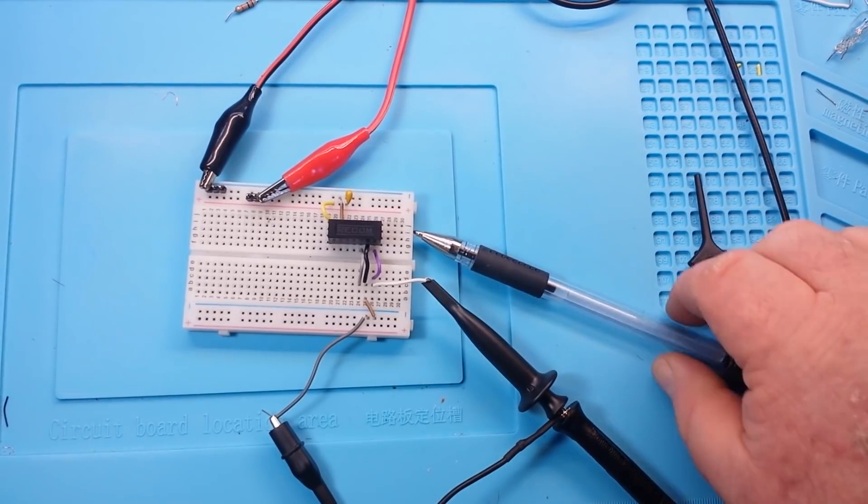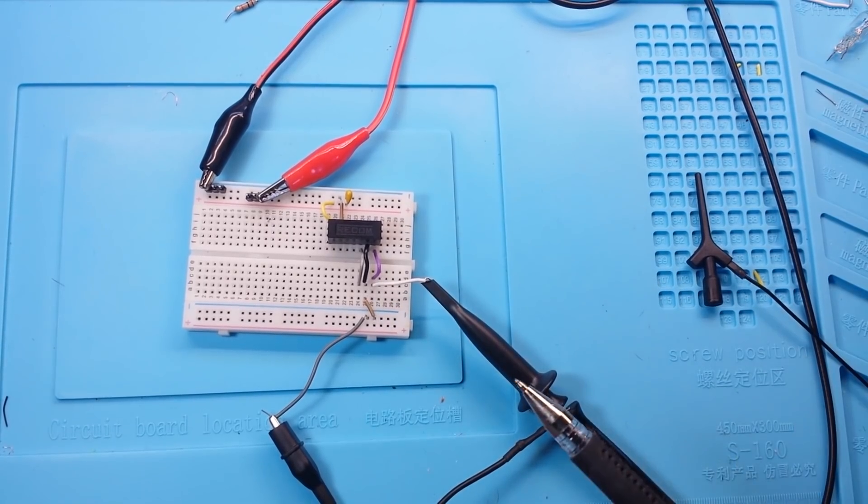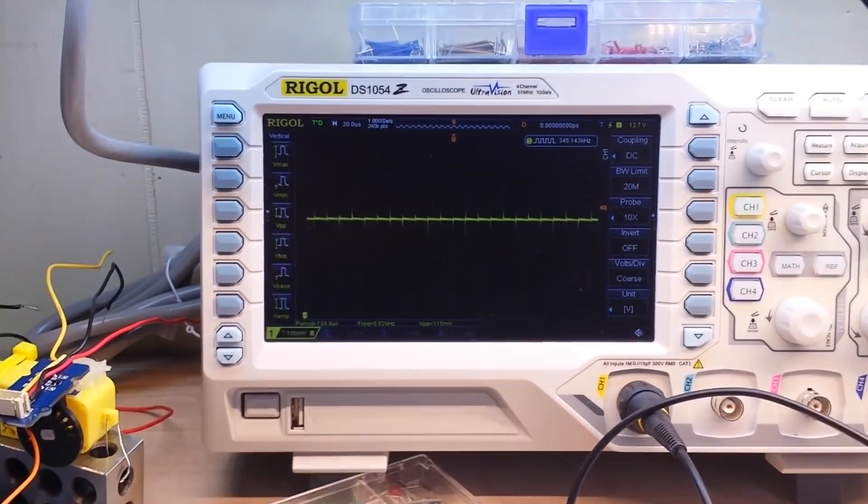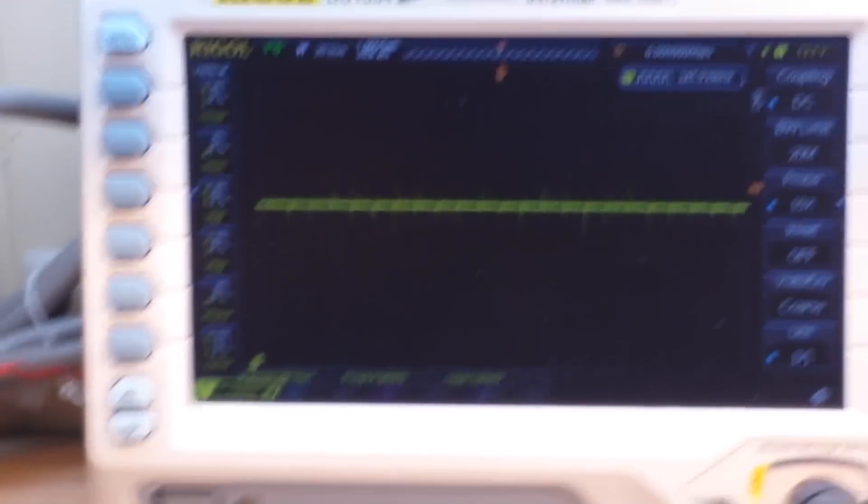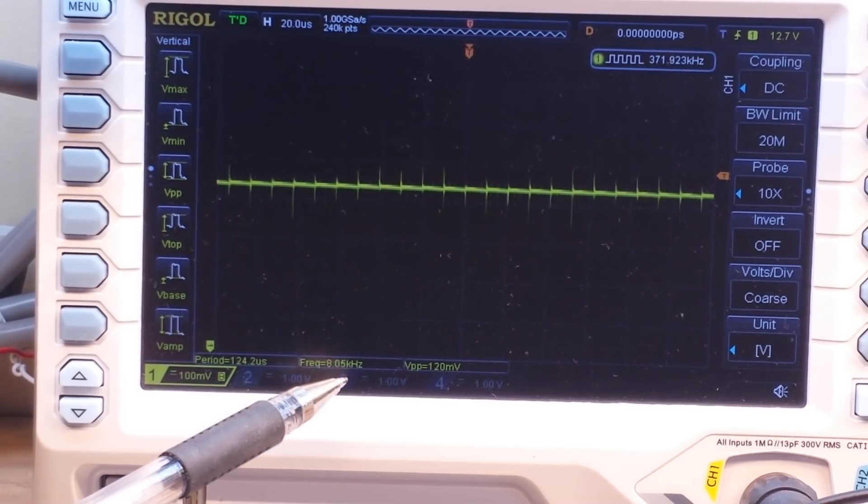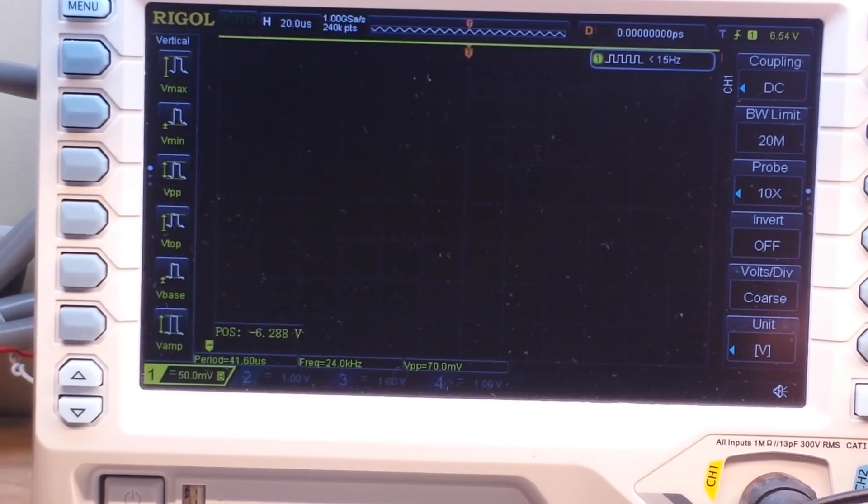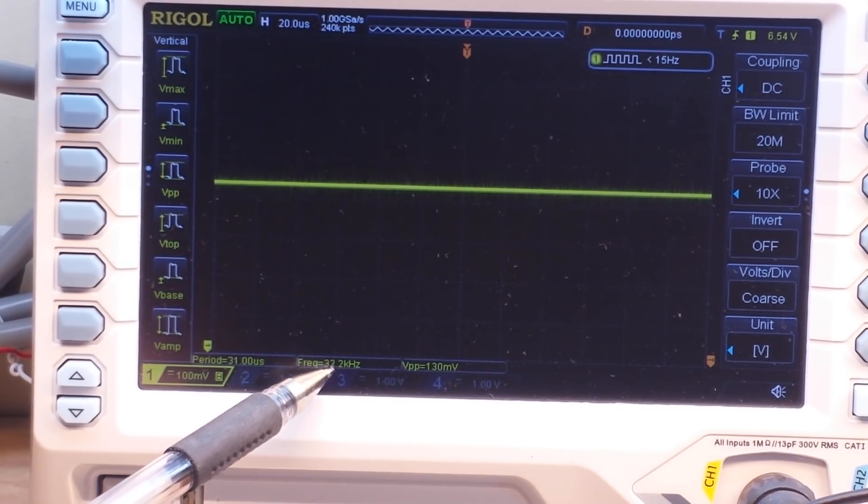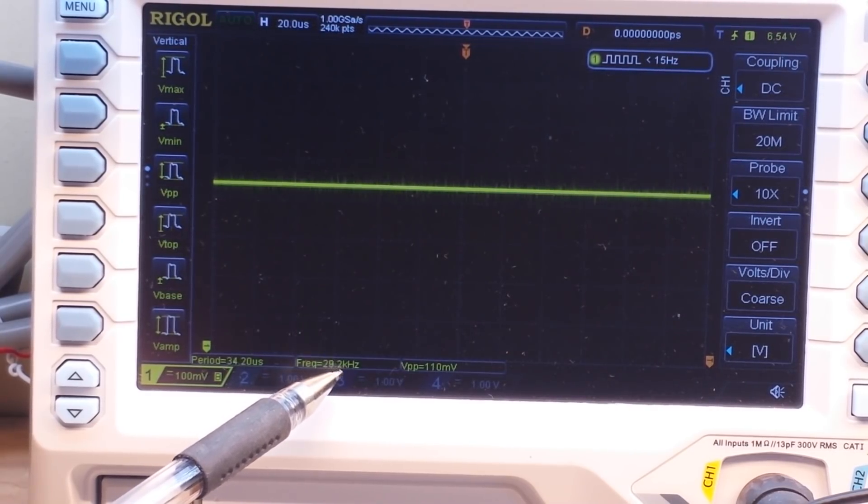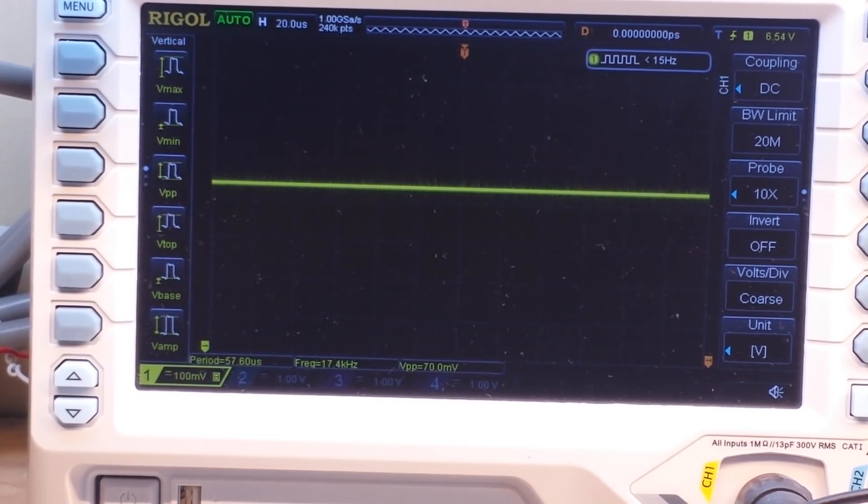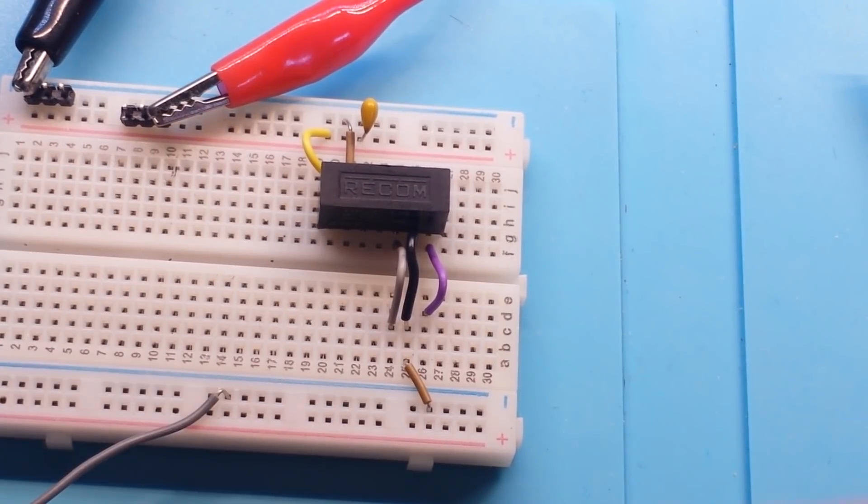I've got the scope hooked up to it, brought the ground out down here just so we don't have any chance of shorting anything out. I don't like to short things out, they go boom. All righty then, let's zoom in here and see what Captain Rigol has to say. So there's our waveform. See if we can have a look there. I'm seeing a frequency of, yeah, I don't know. It seems to be all over the place. Tell you what, let's put a load on it one moment.